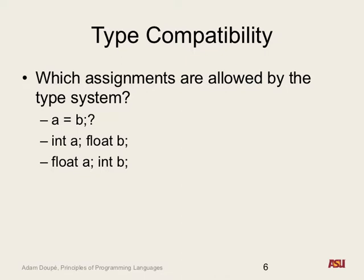In some cases it makes sense — like assigning a character to an int makes sense, because a character is only eight bits, so it's 2 to the 8th. So we can store that value inside of an int. But whether we actually want to allow a programmer to do that — because from the type system, characters and ints are different things. Why would I want to treat a character, an element as part of a string, as an integer? It seems kind of weird.